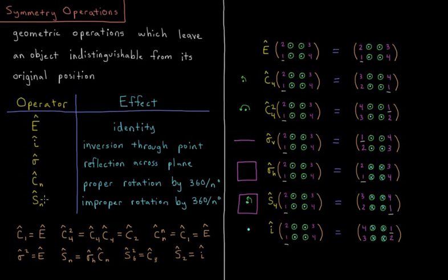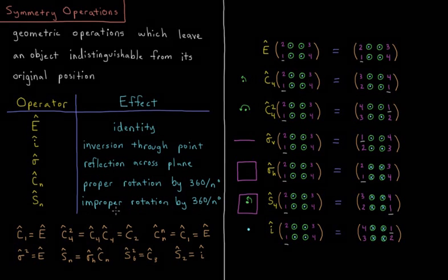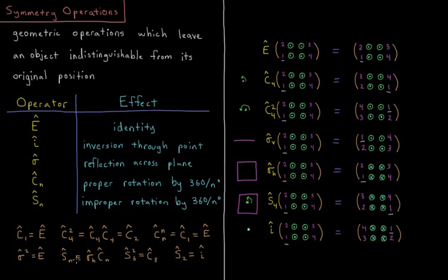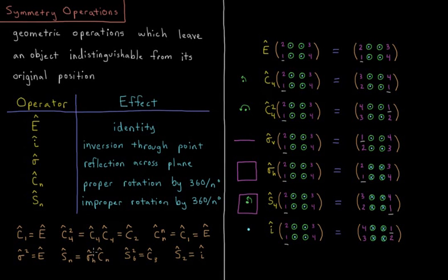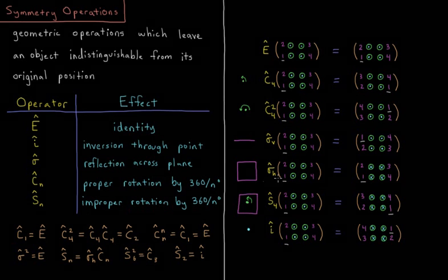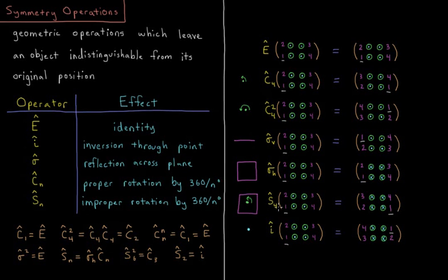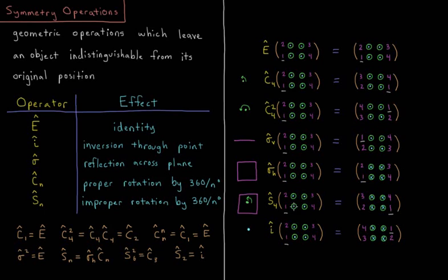The last operation is improper rotation. Improper rotation is defined as doing a proper rotation by 360 over n degrees, and then reflecting through a plane which is perpendicular to the axis I rotated around. For example, S4: I'm going to rotate by 90 degrees.